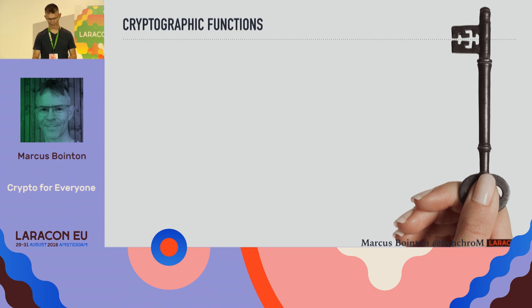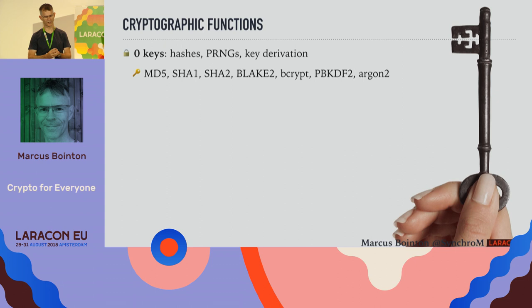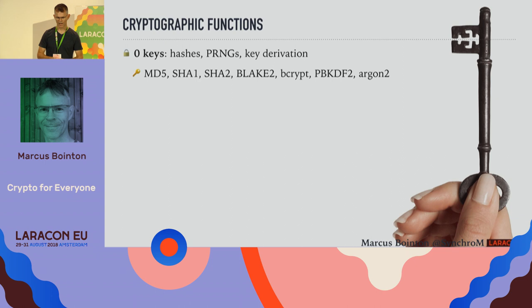Because we're programmers, we start off with zero keys. These are functions that depend either on nothing at all — like random number generators — or on purely data with no passwords. That falls into categories such as hashes and key derivation, and includes algorithms like MD5, SHA1, SHA2, bcrypt, argon2, and so on.